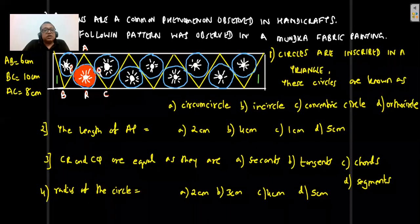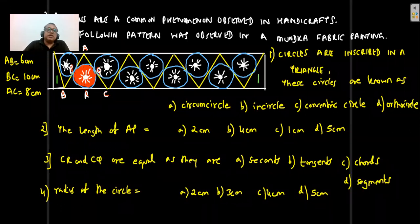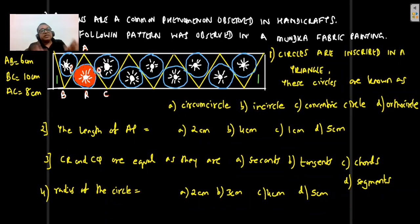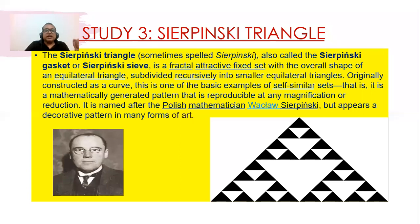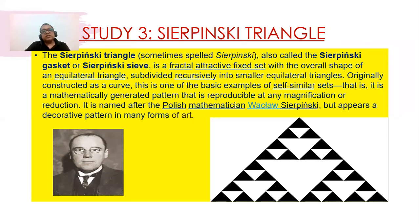Pattern formation — in every handloom you will find patterns. Whether it's a bedsheet, sari, or any fabric, bring it into class and show if there is a pattern. Ask five questions: what do you observe, what is the circle inside the triangle known as, and so on. The Sierpinski triangle — a concept about triangles by a Polish mathematician — involves joining midpoints of similar triangles repetitively. That is called a Sierpinski triangle.